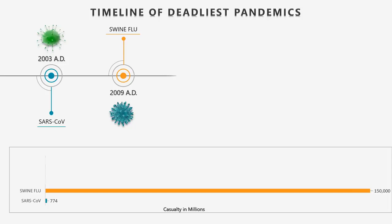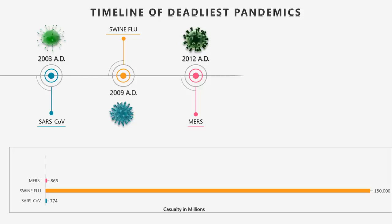At number 3: Middle East Respiratory Syndrome (MERS) 2012. It was a new killer respiratory disease caused by the MERS coronavirus, first reported from Saudi Arabia in September 2012. The total number of laboratory-confirmed MERS-CoV cases reported globally to the WHO is 2,519, with 866 associated deaths.